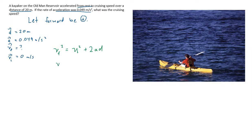So final velocity we don't know. That's what we're setting out to figure out. Initial velocity is 0. So that's nice. That term is gone. 2 times the acceleration, which is 0.049 meters per second squared, times the distance, which is 20 meters.